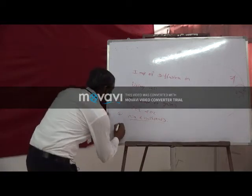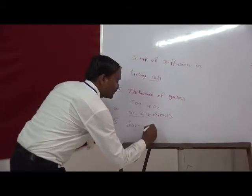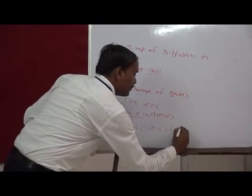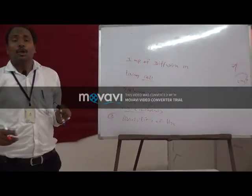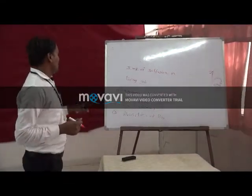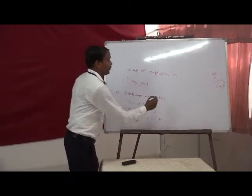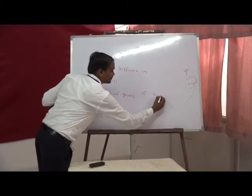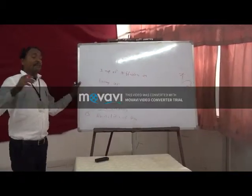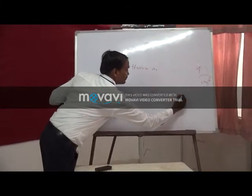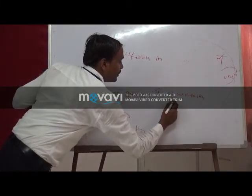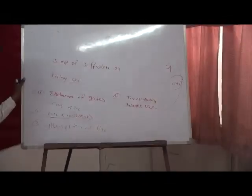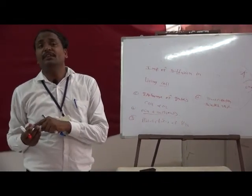So, water is absorbed from the soil into the root hair cells by diffusion. The fourth point is transpiration, during which water vapors (H₂O) come out of the leaf cells by the same process of diffusion.